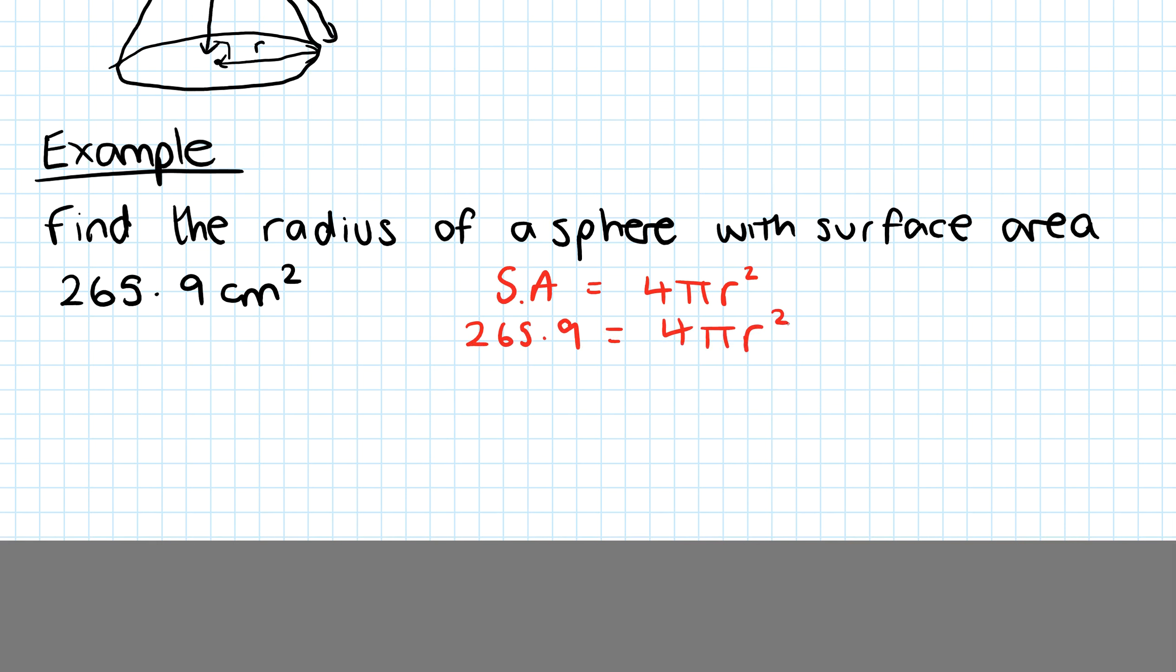First, divide by 4π, which gives r². Then to work out r, simply square root that answer.